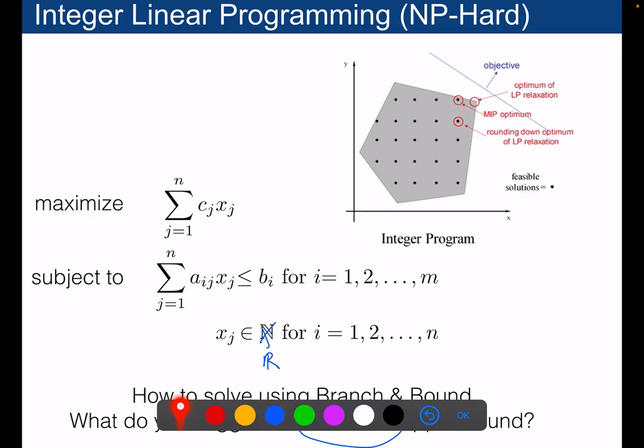Integer linear programs — as opposed to linear programs — are very hard to solve. Linear programs are easy, but if you require the solution variables to be integers rather than real numbers, the problem becomes NP-hard. Simply because of the difference between requiring xi to belong to the integers versus the reals, the problem goes from easy to difficult.